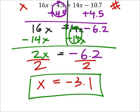All that changes if we do that, if we put the x's on the right side, you end up with a negative 2x equals a positive 6.2. That's the only difference. Now when you divide, you'd still get a negative 3.1.